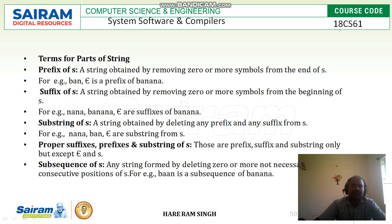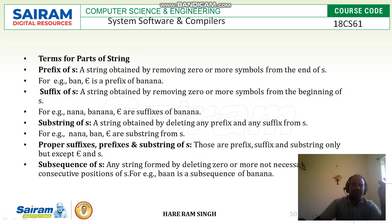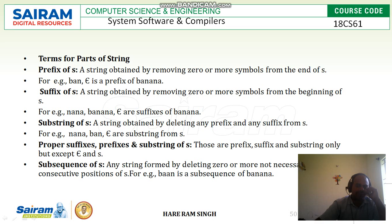Similarly, suffix of S: it is a string obtained by removing 0 or more symbols from the beginning of S. For example, from 'banana', if you remove 'b', 'a', then what is left is 'n', 'a', 'n', 'a'. 'banana' itself and epsilon are also suffixes of 'banana' — because if you remove nothing, 'banana' itself remains; if you remove everything, epsilon remains. So all of these can be a suffix of S.